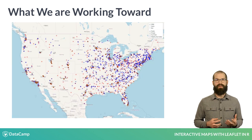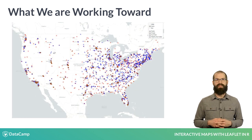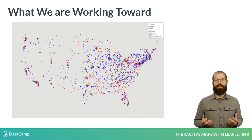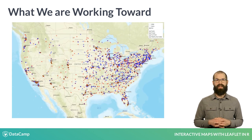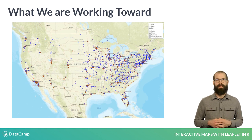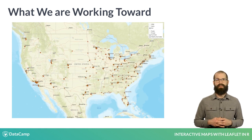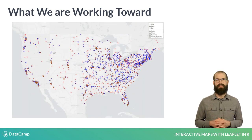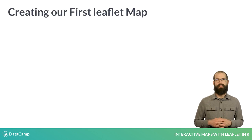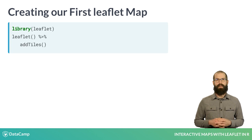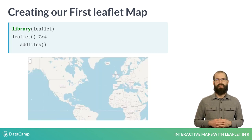Later in the course, we'll add a few pieces of flair to this map, such as labels that appear when hovering and the ability to search for a particular college. But first, we'll learn about the core features of the Leaflet library by mapping DataCamp's locations in Belgium and New York.